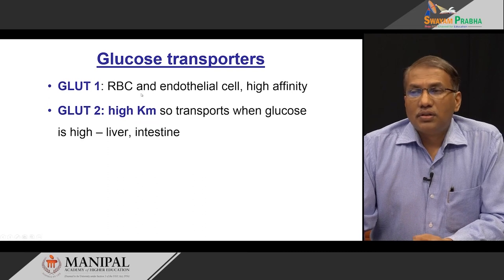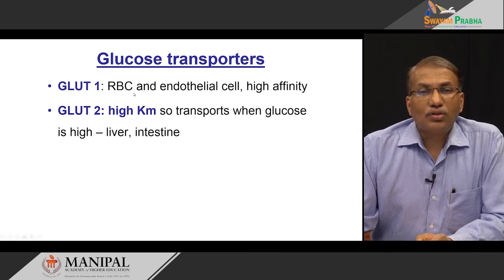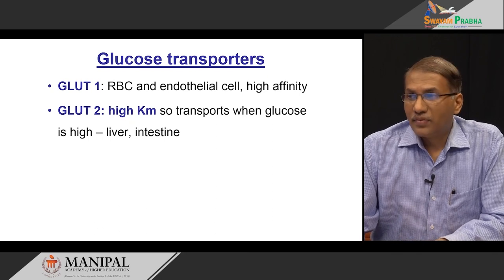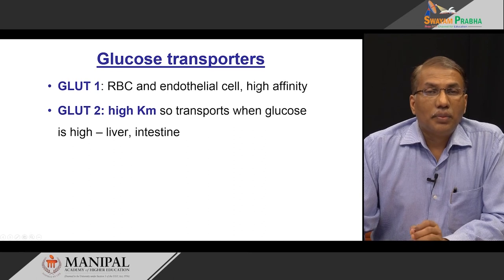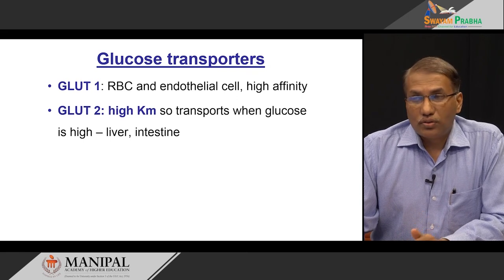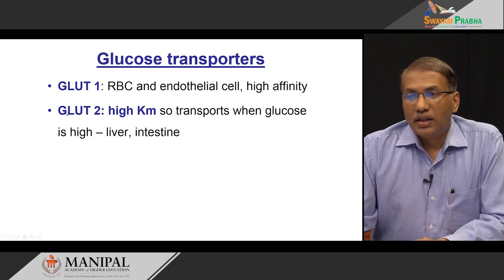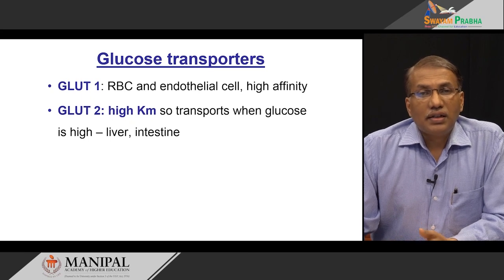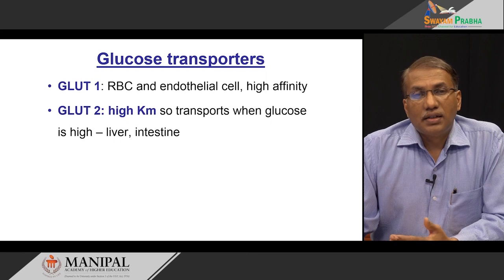This is very critical because red blood cells have only glucose as their source of energy — they do not have mitochondria to use any other reserve of energy. Brain is also critically dependent on glucose because the blood-brain barrier is very selectively permeable to other molecules. Now, coming to GLUT2 — it has very high KM, meaning very low affinity for glucose. That means unless glucose has gone beyond a critical level, it will not facilitate the movement of glucose across this transport system.